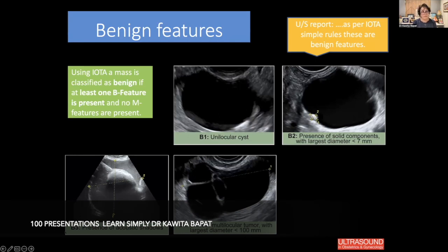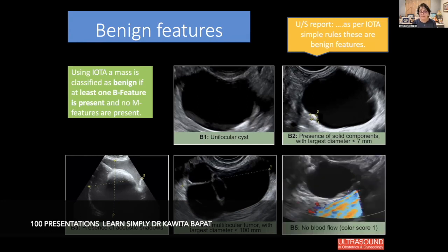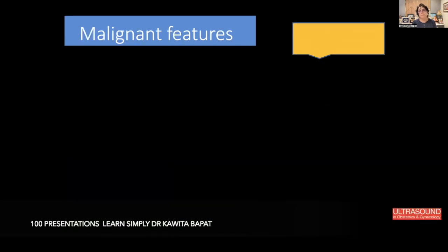B4 is a small multilocular tumor with the largest diameter less than 100 mm. B5 is no blood flow — color score 1 with no detectable color Doppler signal. These are the five benign features: B1 through B5. For malignant features, as per the IOTA simple rules, a mass is classified as malignant if at least one M feature is present and no B features are present.